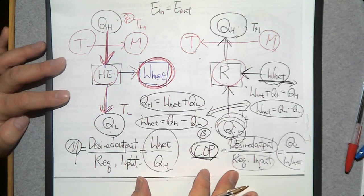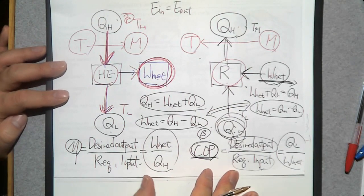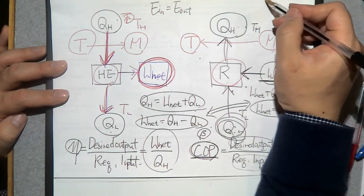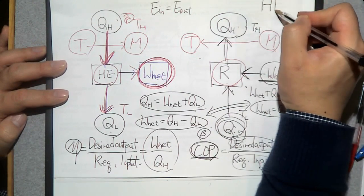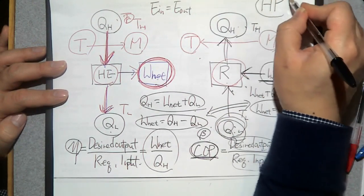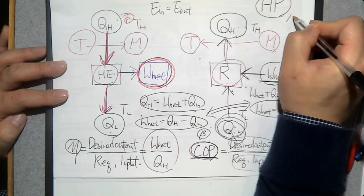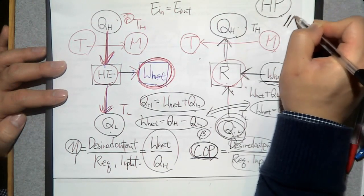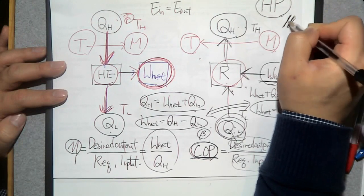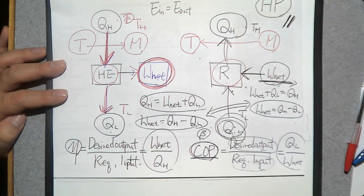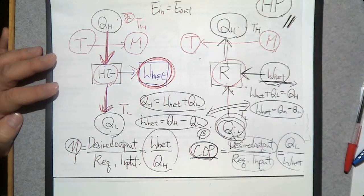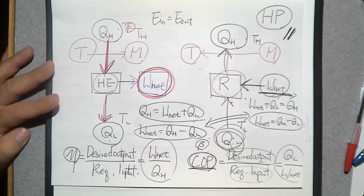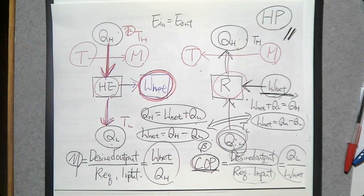On Tuesday, we'll solve practice problems for the refrigerator and then study the last system in Chapter 5: the heat pump, which is useful in winter for providing heat to a house. That's everything for today — see you on Tuesday.